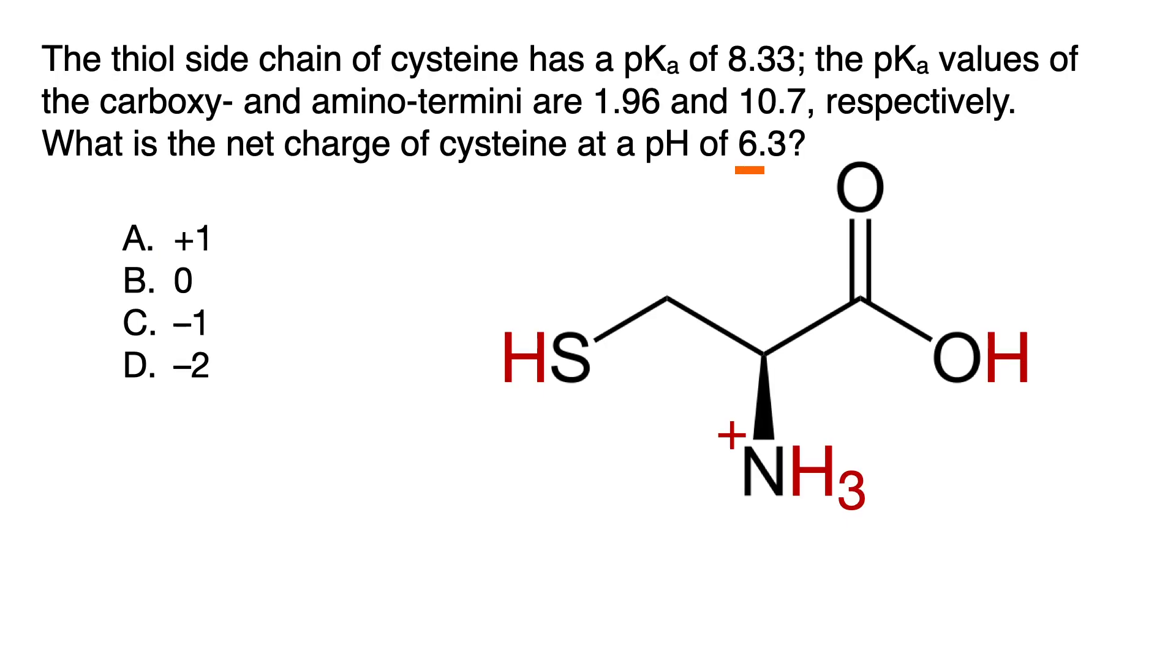So now suppose that instead of 6.3, the question asks for the charge of cysteine at pH of 9.2. Well, we already know that 9.2 is higher than the pKa of the carboxy terminus, so that will have been deprotonated at a pH of 1.96, leaving a negative charge on the oxygen.